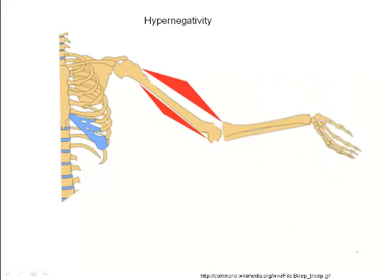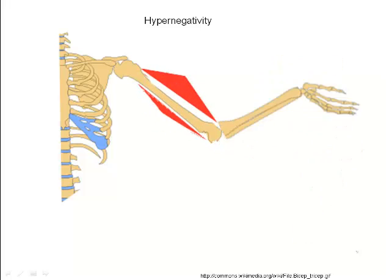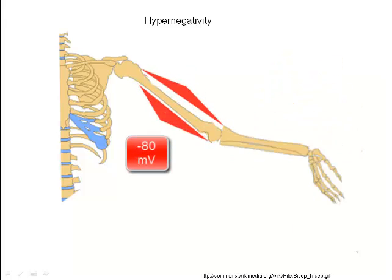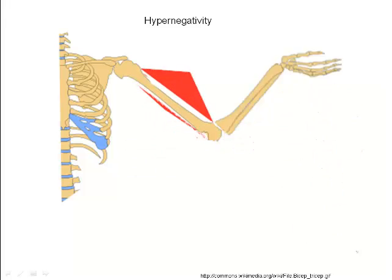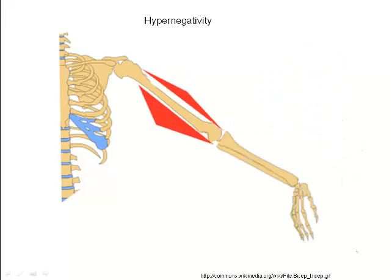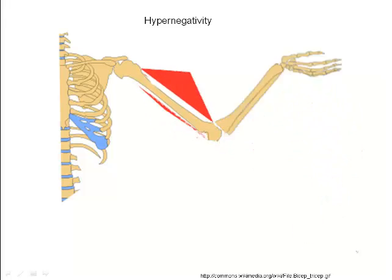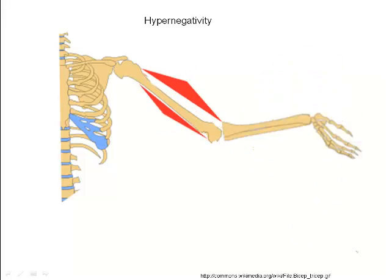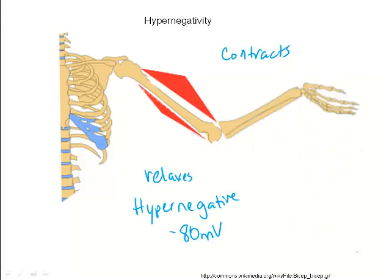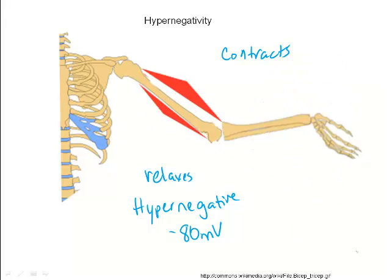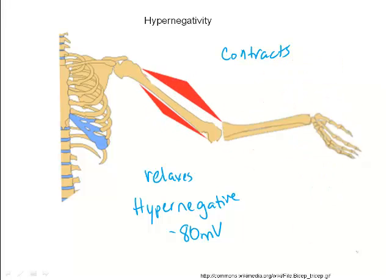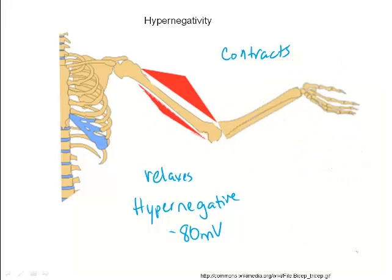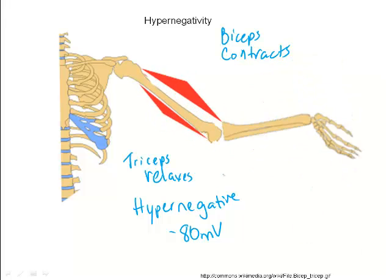For example, when the biceps muscle contracts, the neurons that stimulate the triceps muscle are hypernegative. Potassium, a positive ion, would normally be inside the cell and regular resting potential would be maintained. In hypernegativity, potassium is removed from the cell, making the interior even more negative. Because of this hypernegativity, a greater stimulus is needed to depolarize the neuron. It's less likely to depolarize and the triceps muscle is less likely to contract, which is totally desirable if you want the biceps muscle to be contracting. In this way, hypernegativity allows for coordinated muscle movement.